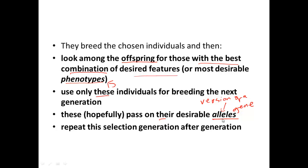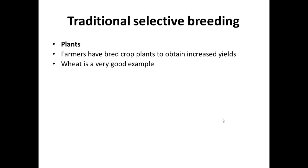Then you test those offspring and repeat the selection process, generation after generation. After many generations you get very desirable, productive animals or plants.